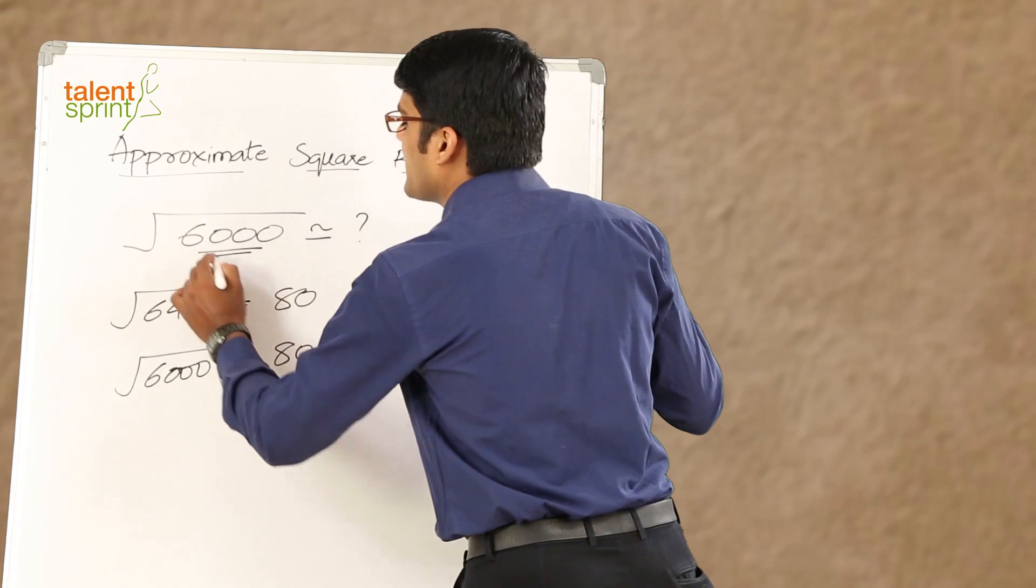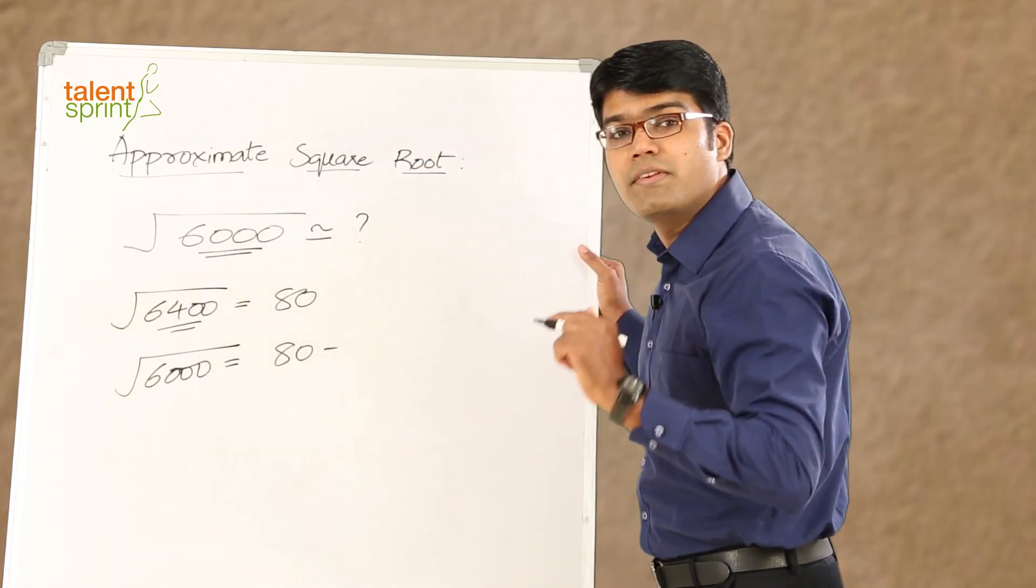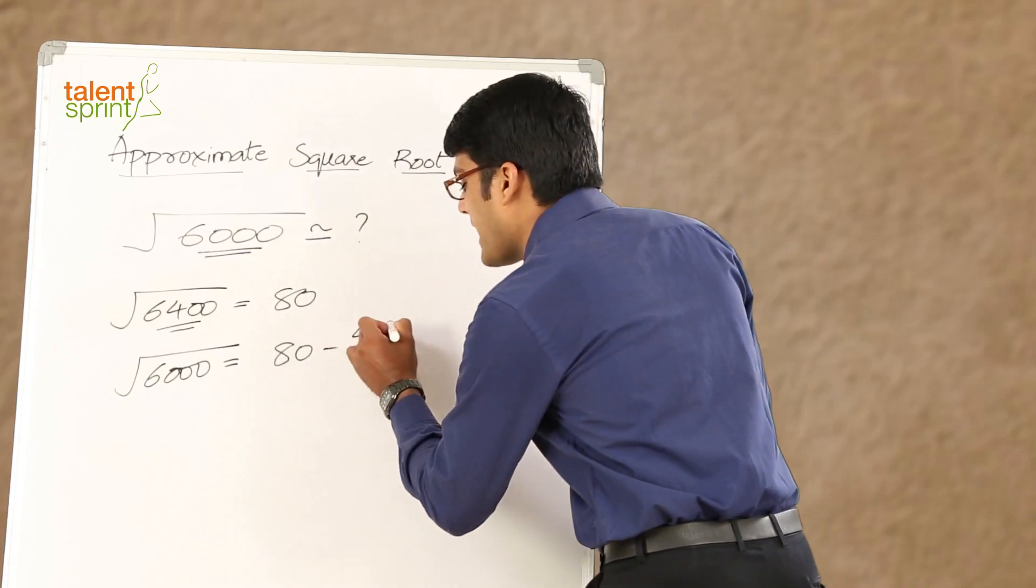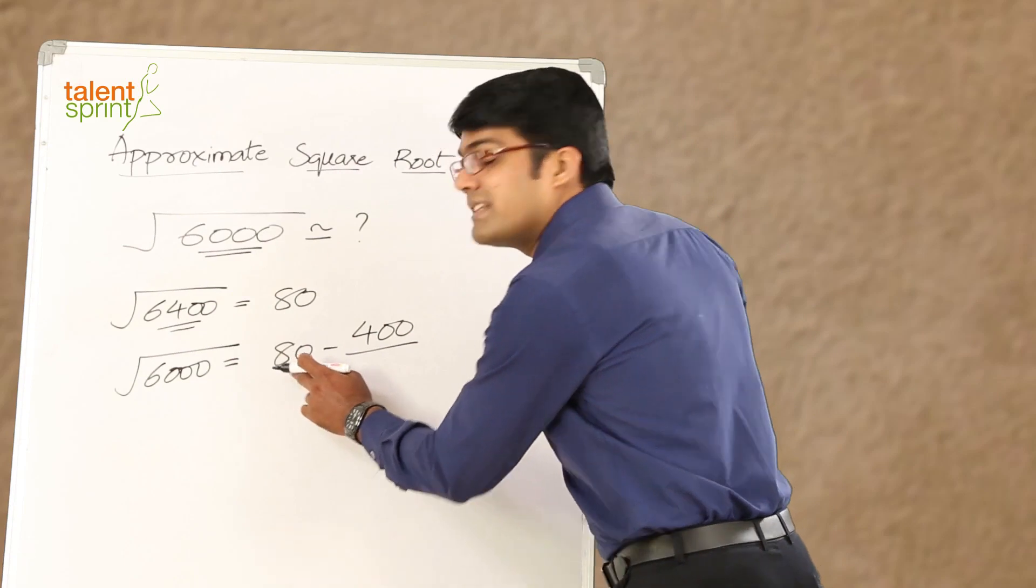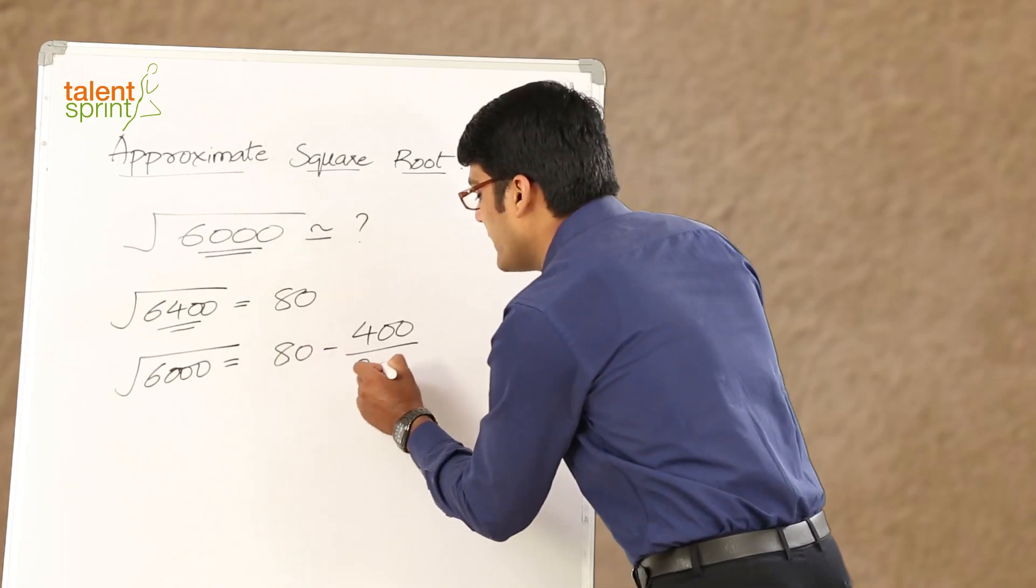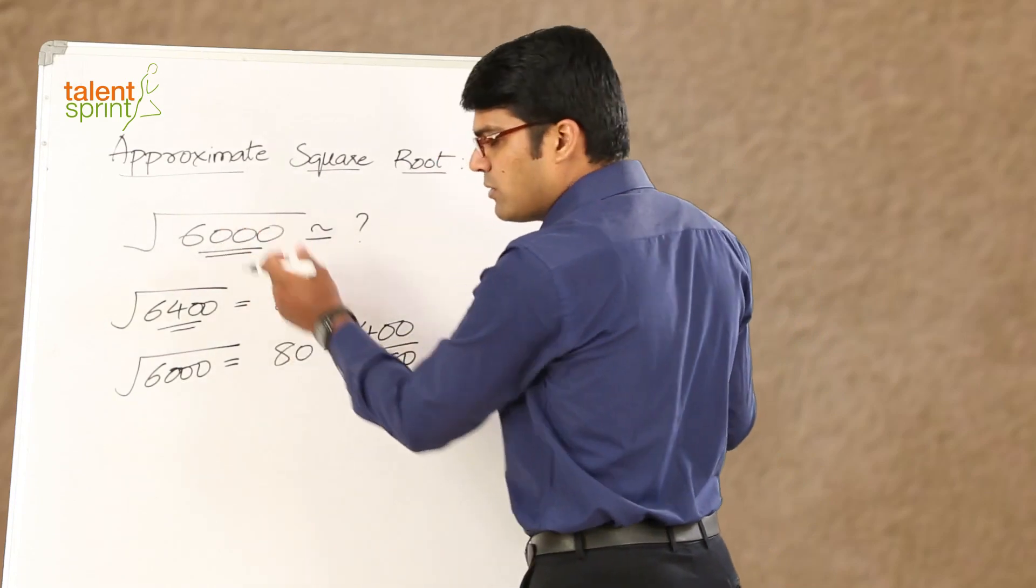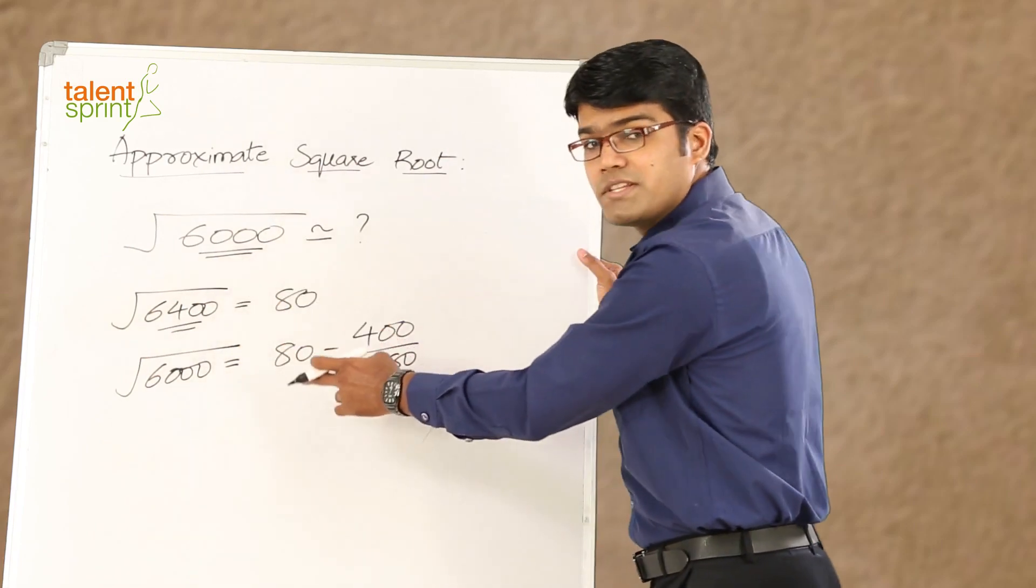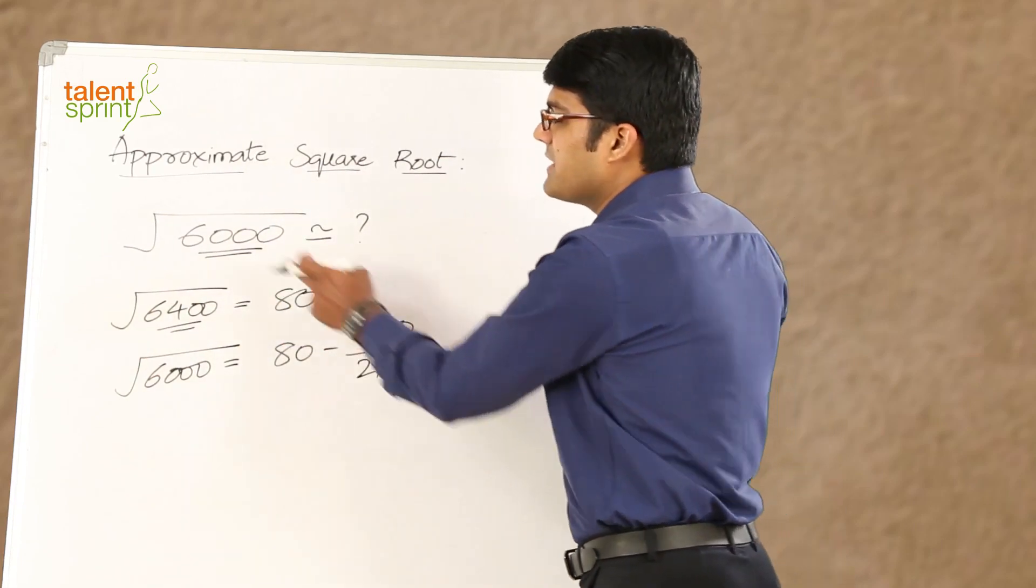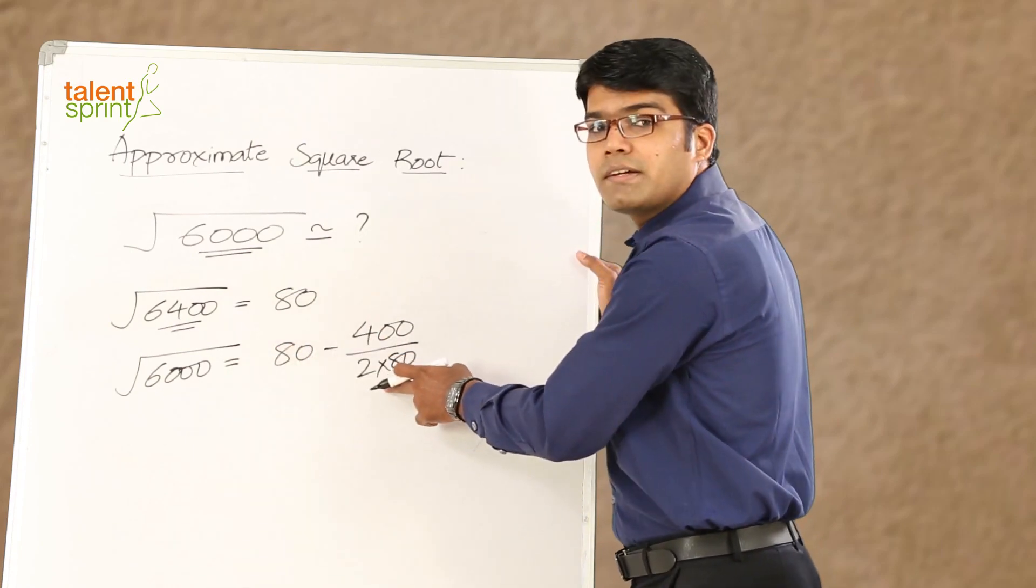Look at the difference between these two numbers. The given number is 6,000 and what we have considered is 6,400. The difference between these two is 400. So, we have to subtract that 400 divided by 2 times the result that we have got in the first step. That is 2 into 80. Are you able to follow? First take the square root that you know, the nearest square root that you know, like 80 in this case. We have considered square root of 6,400 which is 80 minus the difference between the two numbers divided by 2 times the square root that we have taken earlier.